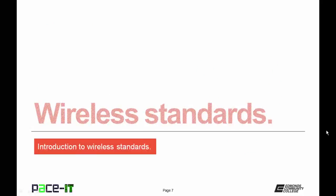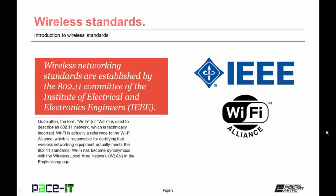Now let's move on to the wireless standards. Wireless networking standards are established by the 802.11 committee of the Institute of Electrical and Electronics Engineers, or the IEEE. Quite often the term Wi-Fi is used to describe an 802.11 network, which is technically incorrect. Wi-Fi is actually a reference to the Wi-Fi Alliance, which is responsible for certifying that wireless networking equipment actually meets the 802.11 standards. Wi-Fi has become synonymous with wireless local area network in the English language, so don't be surprised if you find yourself using the term Wi-Fi when you really mean 802.11.